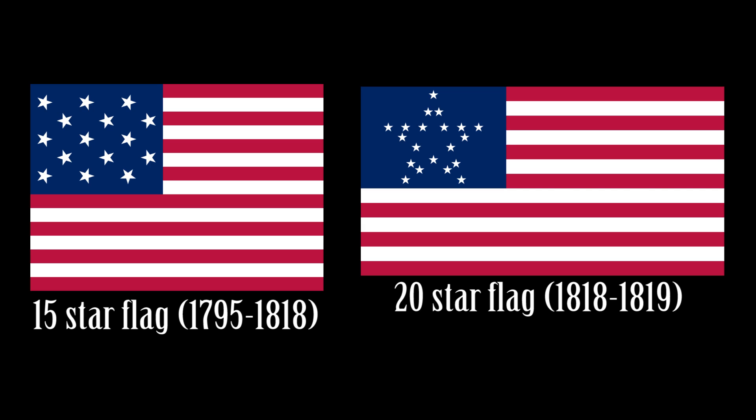At that time, the national flag had 15 stars and 15 stripes. It was finally modified to have 20 stars and 13 stripes in 1818 when five new stars were added in the canton for the states of Indiana, Louisiana, Mississippi, Ohio, and Tennessee. Tennessee continued to see changes in the national flag until the present 50-star flag.